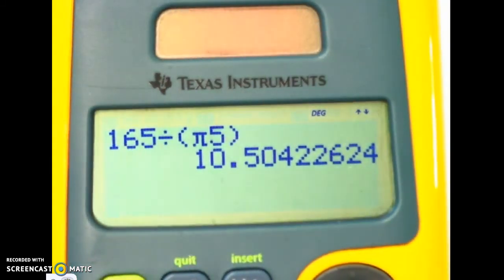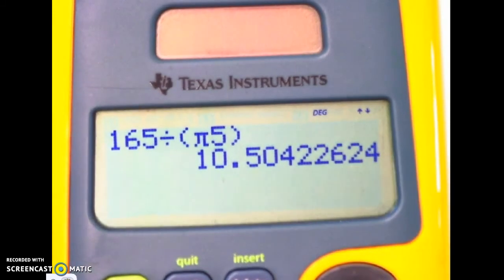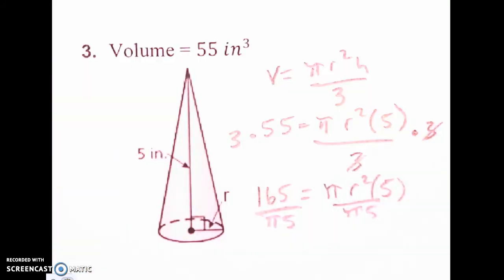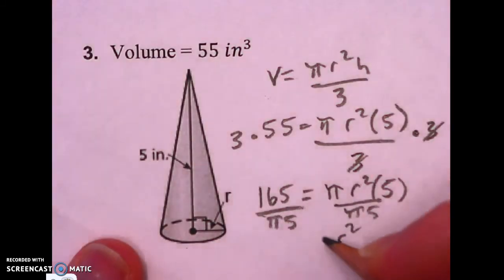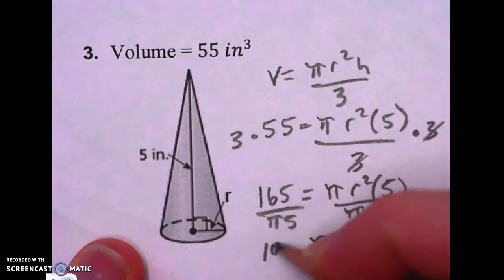So I get about 10.5, but I'm not going to delete that number off my calculator. Make sure you leave that on your screen. Let's just kind of write it down. We have R squared is about 10.5.